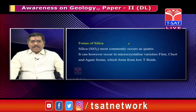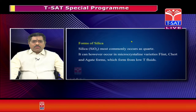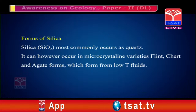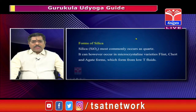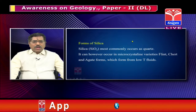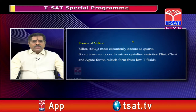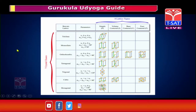The last mineral is silica: SiO2 which occurs as quartz. There are also microcrystalline varieties like flint, chert, and agate, which form at low temperatures from fluids. Silica has polymorphic forms: quartz, tridymite, cristobalite, stishovite, and coesite. Coesite is a high-pressure silica polymorph. We have to remember the polymorphic forms of silica.